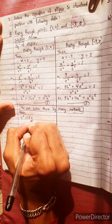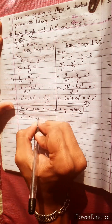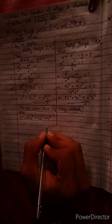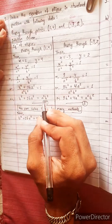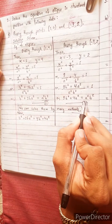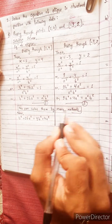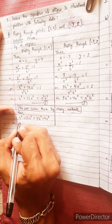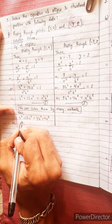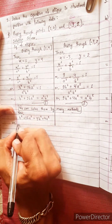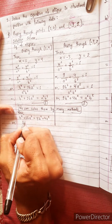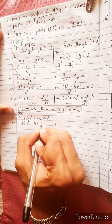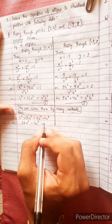From equation one: b² + 16a² = a²b². From equation two: 9b² + 4a² = a²b². Setting them equal: 16a² - 4a² = 9b² - b², which simplifies further.